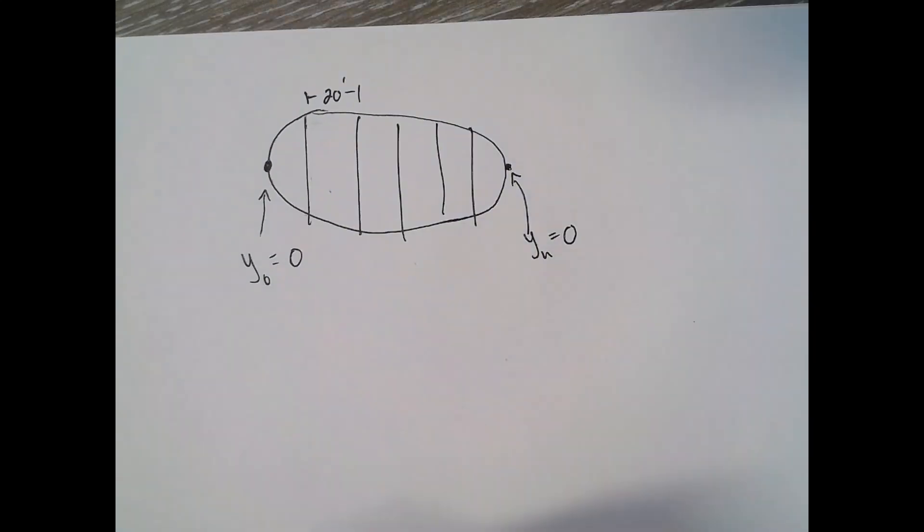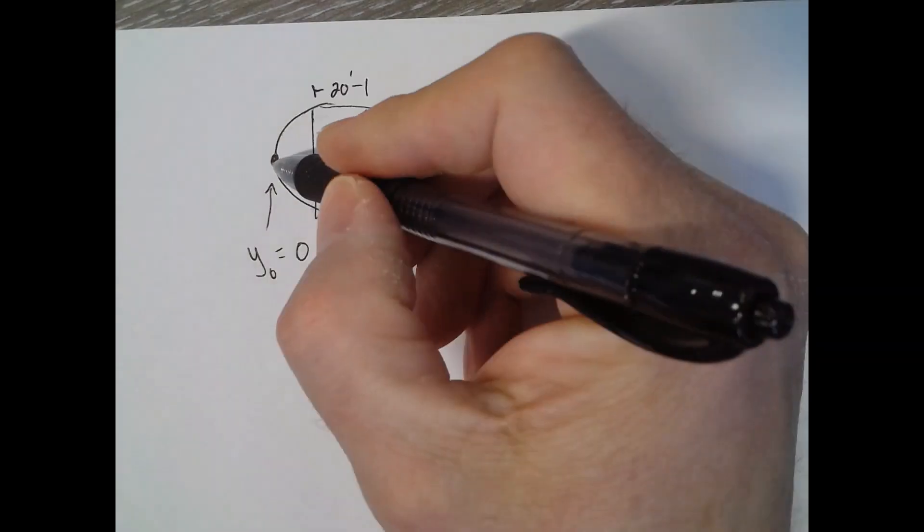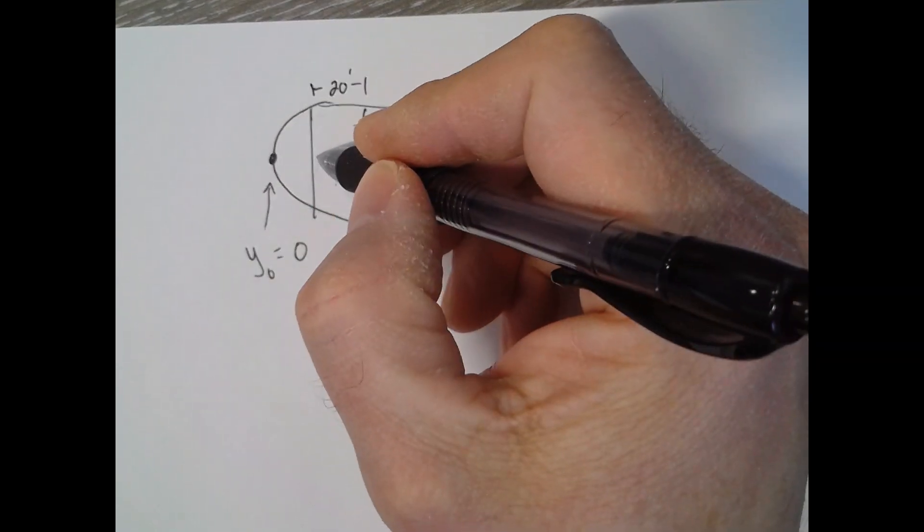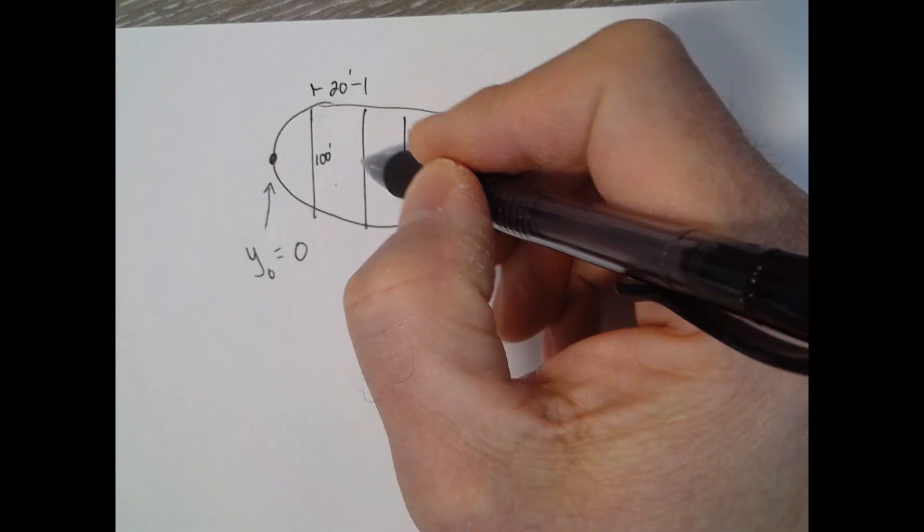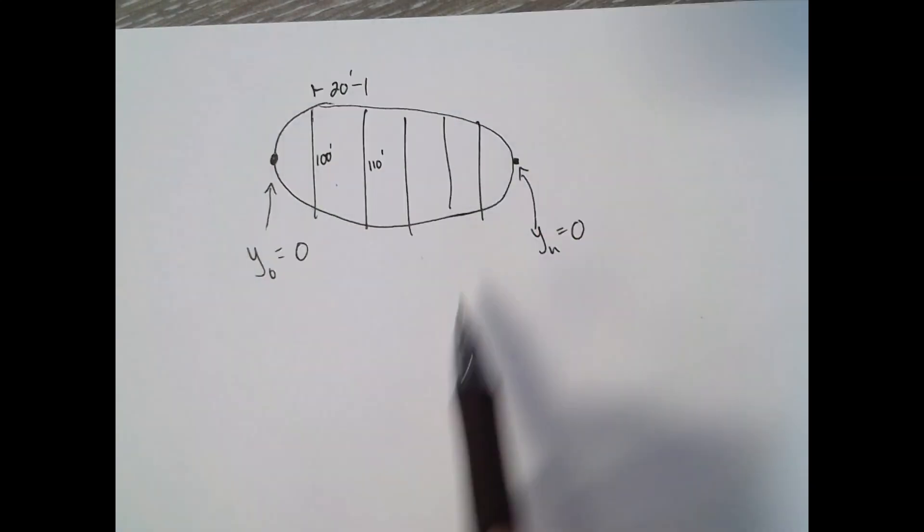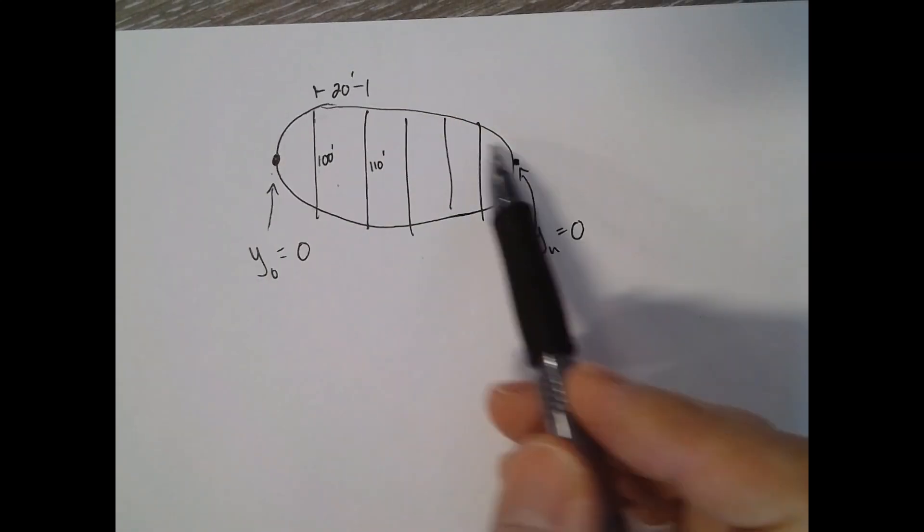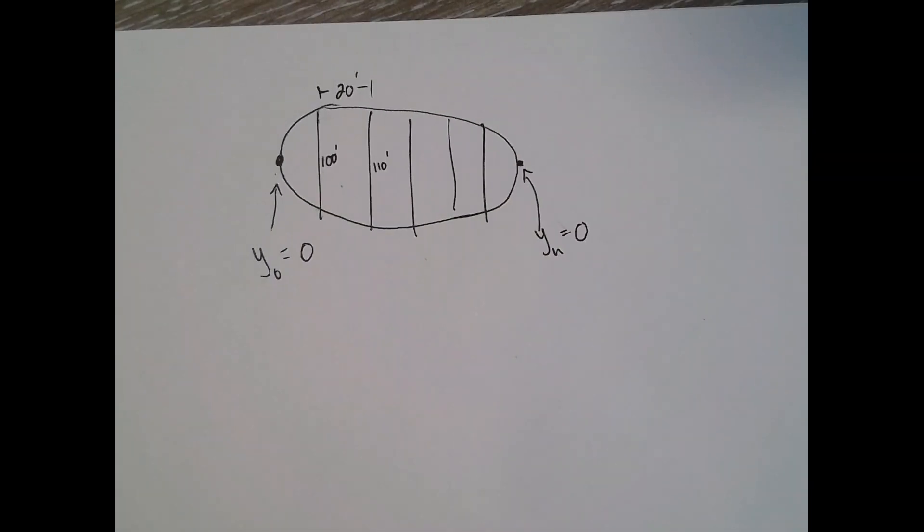And then maybe this is like 100 feet and this is 110 feet and so on. But your first one zero, your last one zero, if you have like a three or a two-dimensional shape like that. I know that in your assignment you might have to find like the cross-sectional area of an airplane or part of the airplane body.